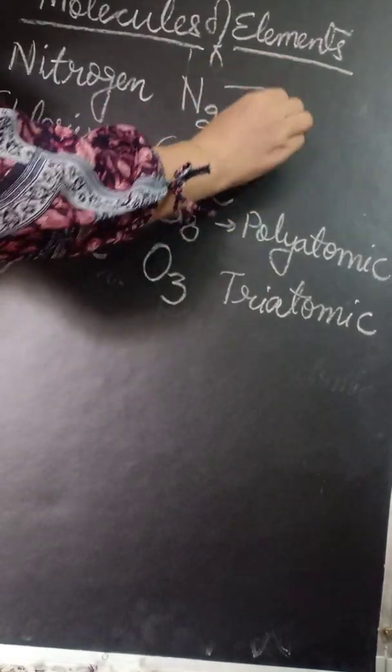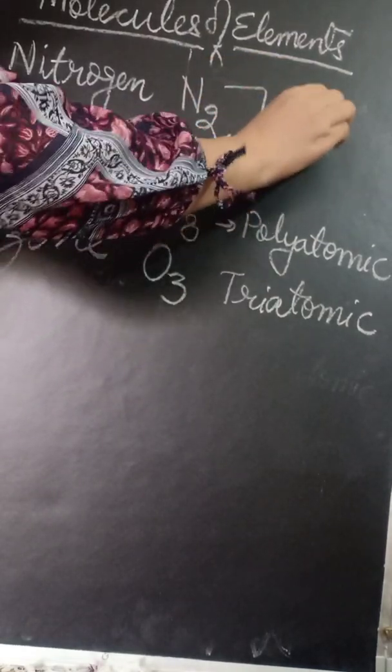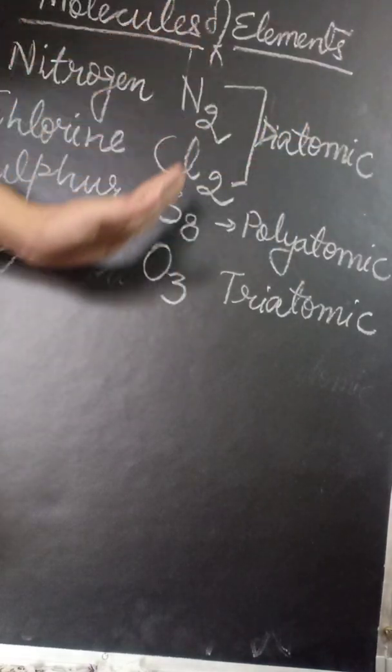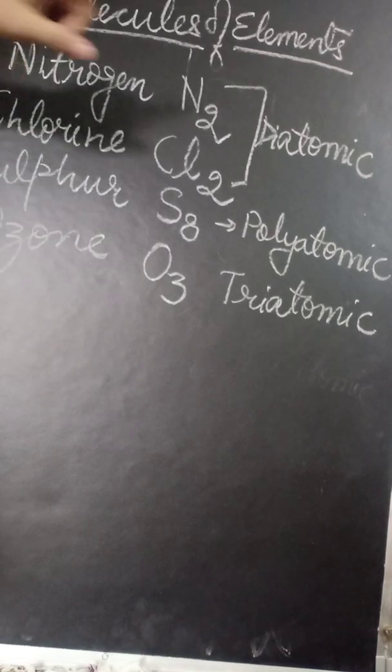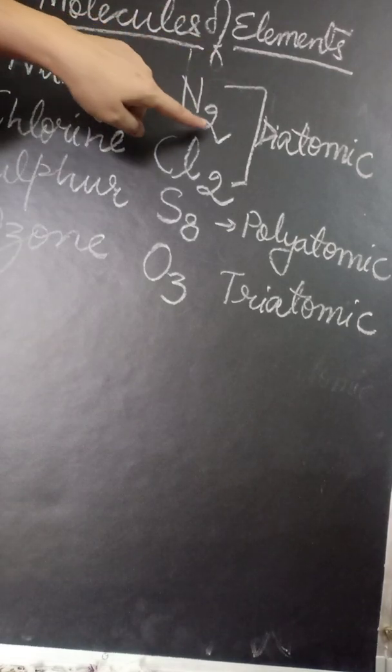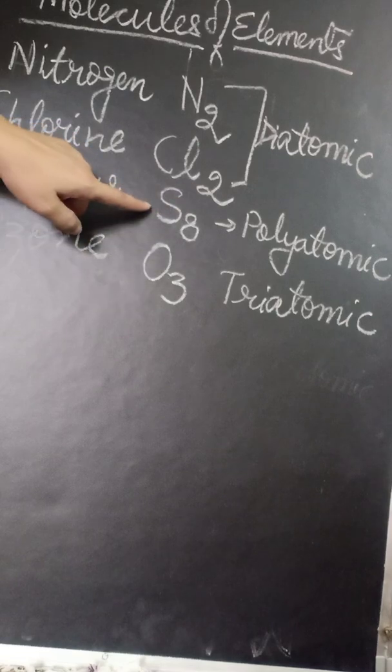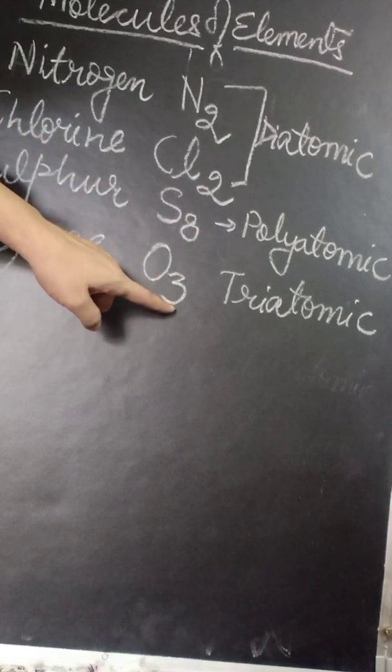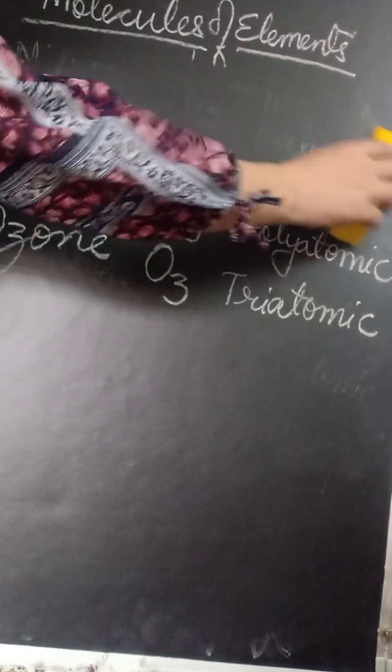So what are we talking about? We are talking about the atomicity of these molecules. The atomicity of nitrogen is 2, the atomicity of chlorine is 2, the atomicity of sulfur is 8, the atomicity of ozone molecule is 3. We will write only the atomicity now. Atomicity refers to the number of atoms in one molecule of an element.